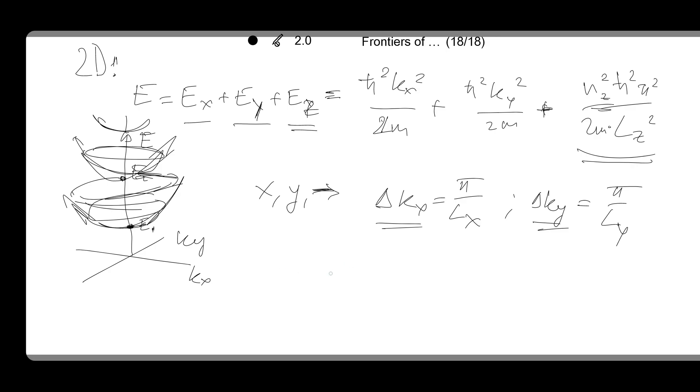And then the area occupied by one state in k-space per k-state will be delta k squared. That is delta kx times delta ky, which is pi over Lx times pi over Ly. And that's pi squared over the area of that material, two-dimensional material.